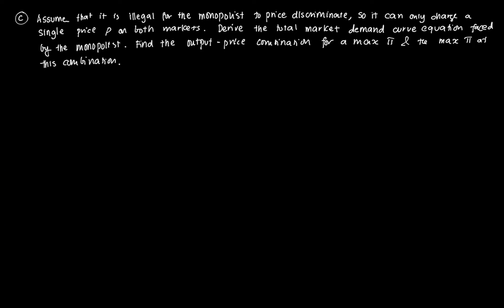Now assume it's illegal for the monopolist to price discriminate — it can only charge a single price in both markets. We need to derive the market demand curve and find the profit-maximizing price and output. With one price, P1 equals P2 equals P, and total quantity is Q1 plus Q2.